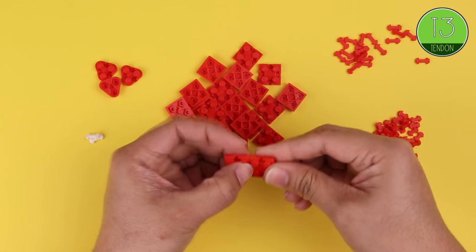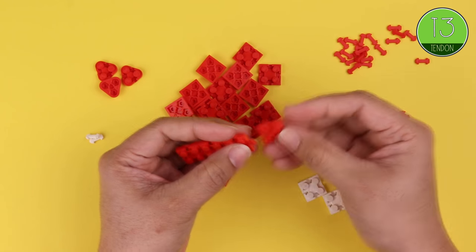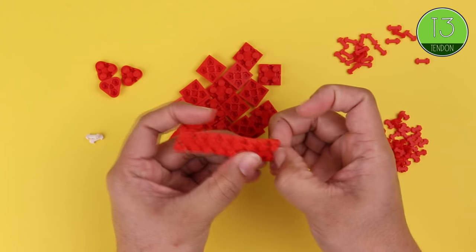So we'll make our Christmas stocking in two halves, just as if you were stitching a real sock together. We'll use T3 tendons and create kind of a red brick mat.